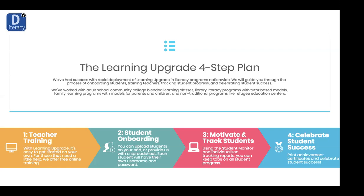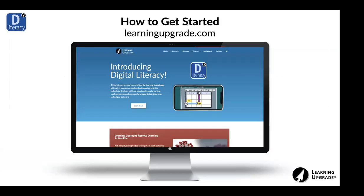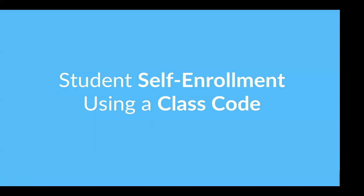All you need to do is provide learners with a single class code and a short list of instructions. This has really taken off — we have close to 100,000 lessons completed for Learning Upgrade since schools went on lockdown about a month ago. We've added hundreds of adult ed programs. The number one thing you need to do is click the link in the chat or go to our homepage. You'll see a learn more button for introducing digital literacy, and at the bottom of that page is a form for the pilot request. I'll be working through those requests and sending you an email with everything you need to get started.